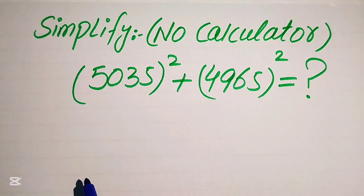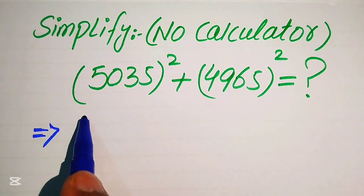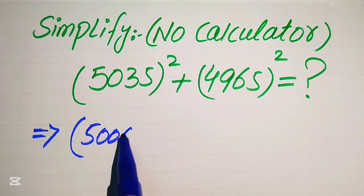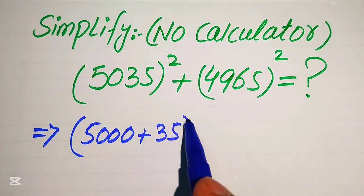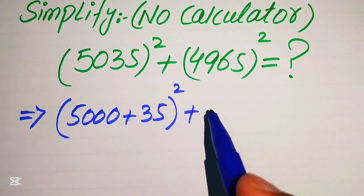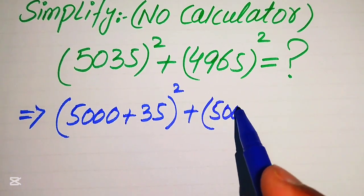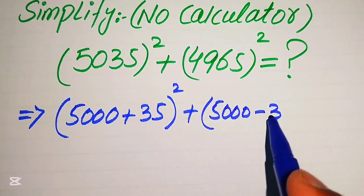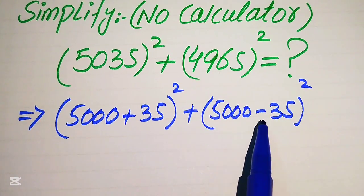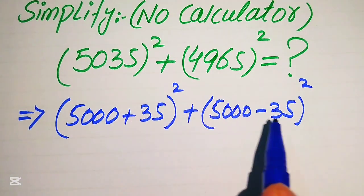The very first step we are going to do is rewrite this algebraic expression in this form. We write 5035 as 5000 plus 35, whole squared, plus 4965 as 5000 minus 35, whole squared. Because 5000 minus 35 gives 4965, and 5000 plus 35 gives 5035.